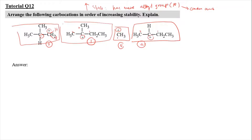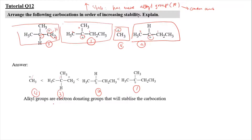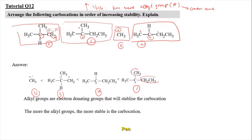So we can arrange them: number one is the most stable, number two is next, then number three, and number four is least stable. The explanation is that alkyl groups are electron-donating groups that stabilize the carbocation. The more alkyl groups present, the more stable the carbocation. When electron-donating groups (EDG) are present, they pass electron density to C⁺, which has fewer electrons, and stabilize the structure. That is why more alkyl groups stabilize the carbocation.